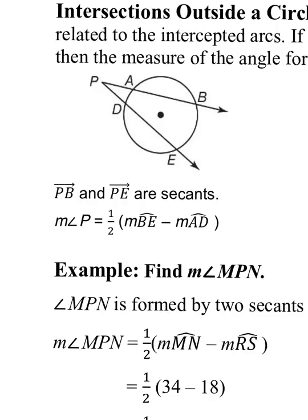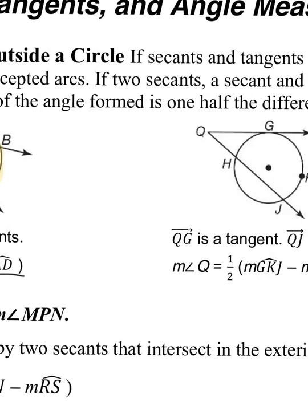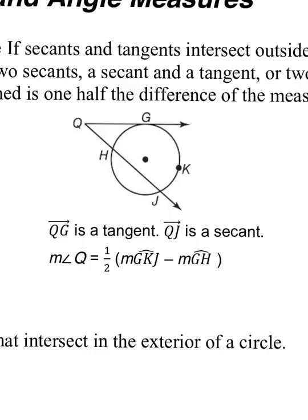On every single one of these, I think about dividing by two instead of multiplying by one half. These intercepted arcs — it doesn't matter if it's two secants, two tangents, or one of each. You subtract the intercepted arcs: make sure the larger arc goes first and the smaller arc goes second, then divide by two to get the exterior angle. If a tangent and a secant, it's still large arc minus small arc divided by two equals the exterior angle.